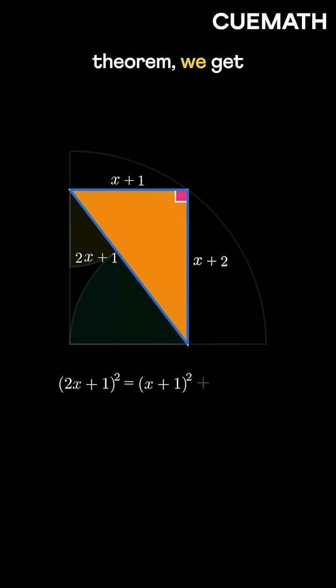Applying the Pythagorean theorem, we get this equation. Simplifying this gives us x equals 2.